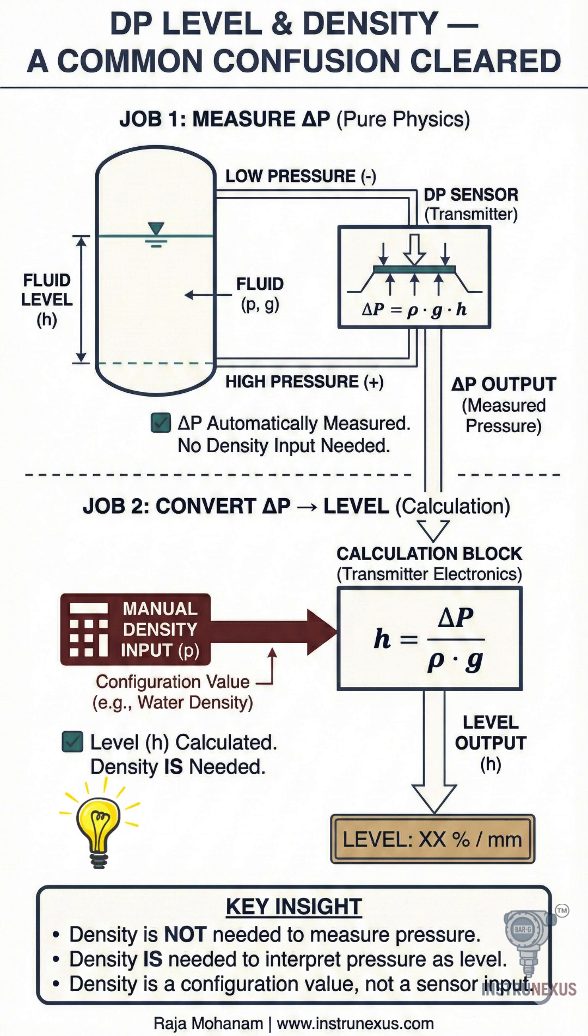In a DP-level measurement, the pressure acting on the transmitter diaphragm is created naturally by the fluid itself. Higher density means higher pressure. Lower density means lower pressure.